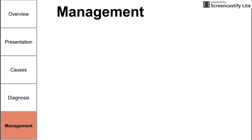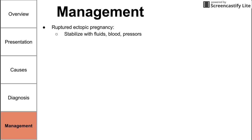For management of ectopic pregnancy, there are several options depending on the situation. If you have a ruptured ectopic pregnancy, stabilize the patient first with fluids, blood transfusions, and pressors. Then take them to the OR for a salpingectomy — remove the ruptured tube before it can cause infection or peritonitis.